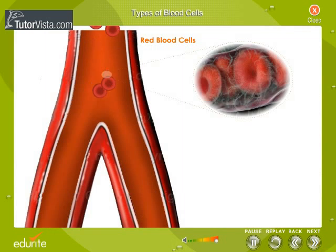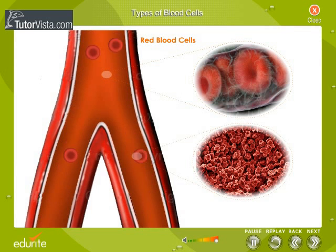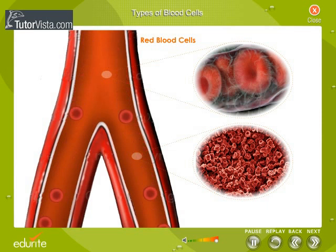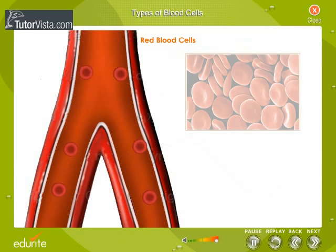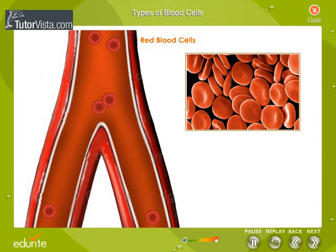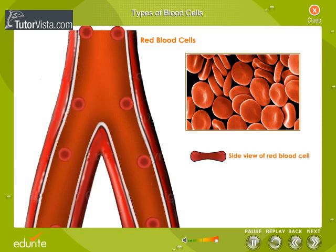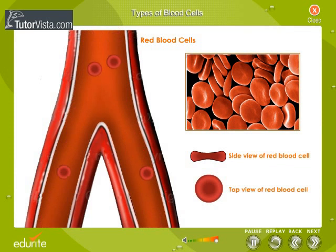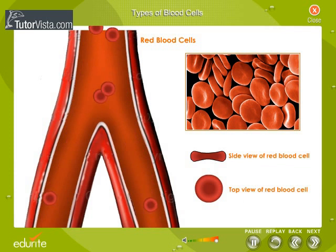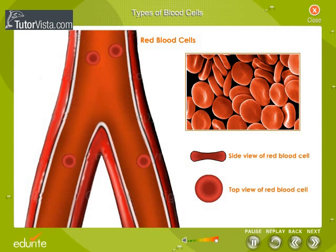It is the red blood cells that give the red colour to our blood. Red blood cells are red only because they contain a protein called hemoglobin, which is bright red in colour. Did you notice the shape of RBCs? They are biconcave disc-like structures. Mature cells lack a nucleus. These cells are highly flexible, allowing them to squeeze through the tiniest capillaries.